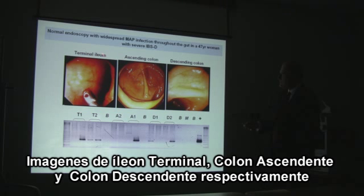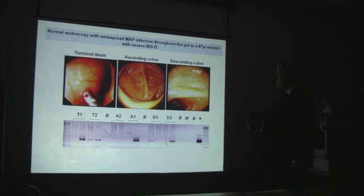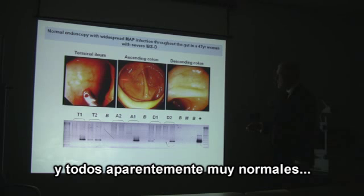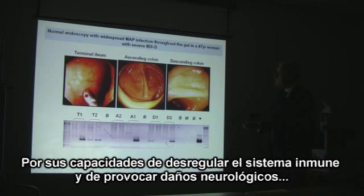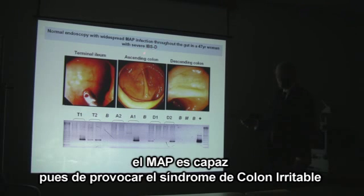Here is capsule endoscopy of the terminal ileum, ascending colon, and descending colon of somebody with IBS — they all look entirely normal. The panel below shows, however, that this person has an extensive MAP infection in all three regions of the gut sampled. Through its immune dysregulation and neurological damage, the MAP is causing IBS.